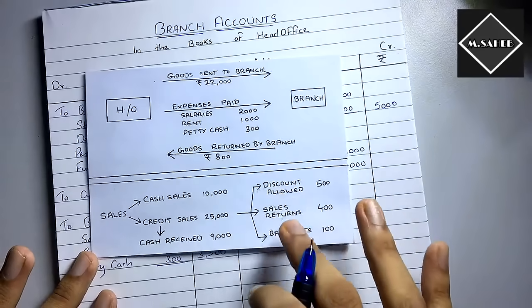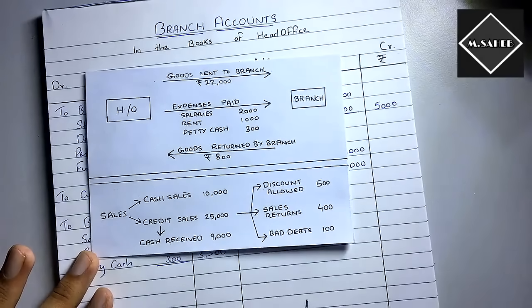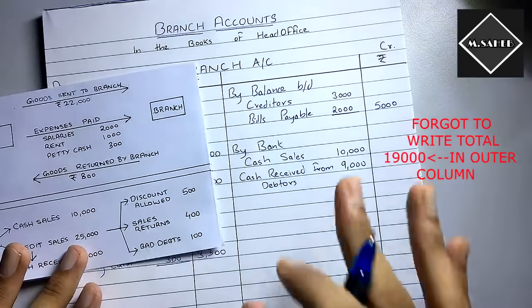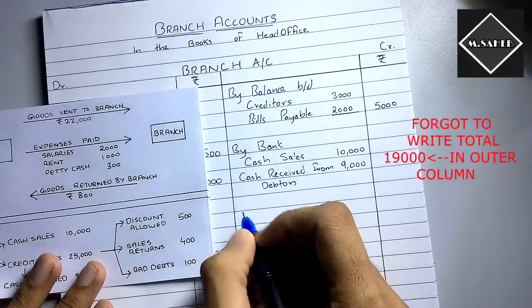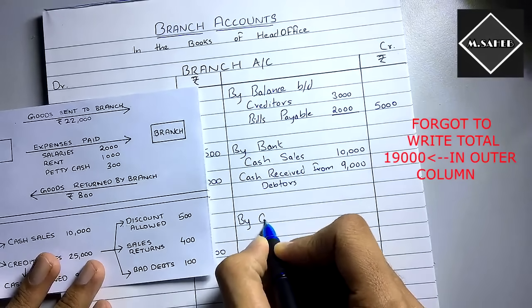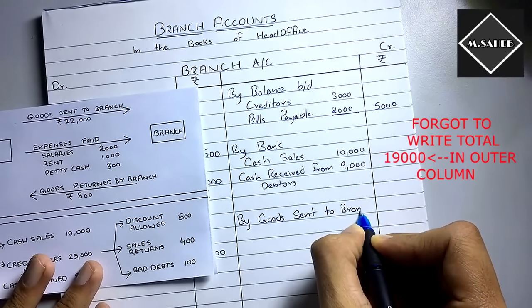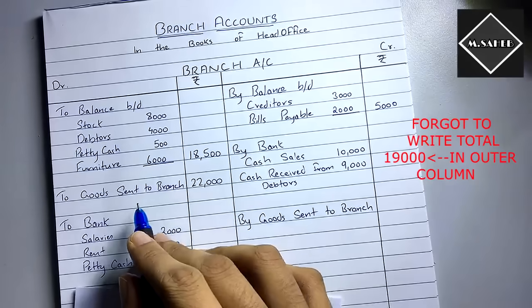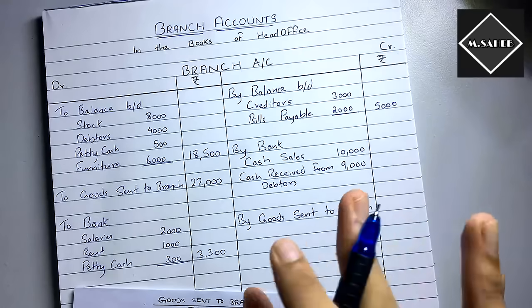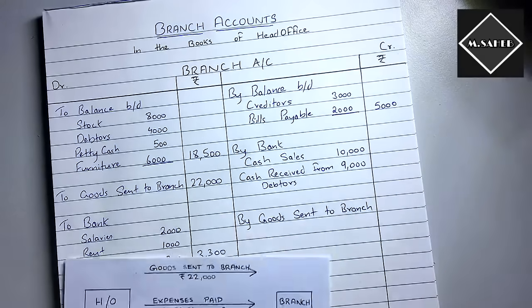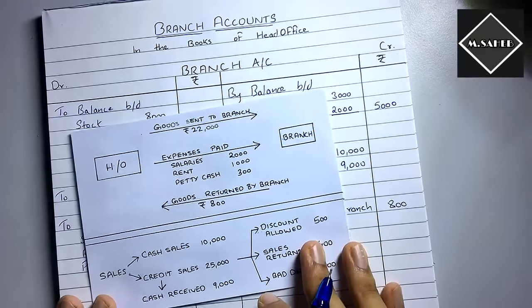Goods returned by branch comes on the credit side as 'By Goods Sent to Branch' — this is the opposite posting to 'To Goods Sent to Branch'. Here, the head office is receiving the goods back, so it's credited. The amount is 800.